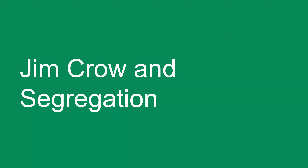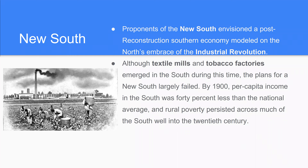All right, everybody, welcome back. We are talking about Jim Crow and segregation today. This is one of the more controversial types of topics that we get to talk about. When we get into it, we need to talk about the New South. The New South is people wanting to envision a post-Reconstruction Southern economy modeled on the North's embrace of the Industrial Revolution — basically emulating what's happening up north, having factories and things like that, trying to move away from big agricultural businesses and industries.